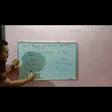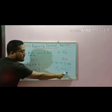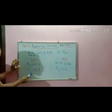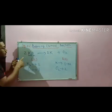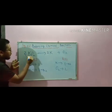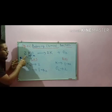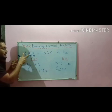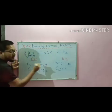Now see the oxygen part — oxygen one on LHS, oxygen two on RHS. Since oxygen two is there, I have to make it two. So if I give a coefficient of two on the LHS, our oxygen becomes two. But this two also applies to potassium, making potassium four — two into two equals four.